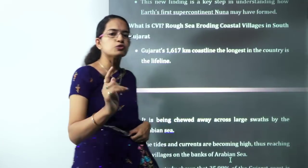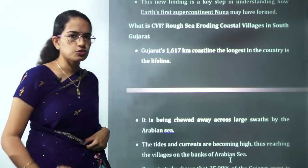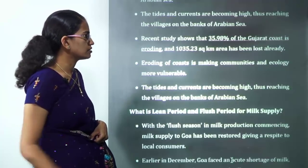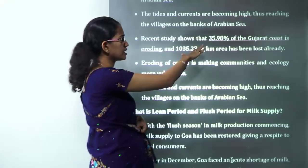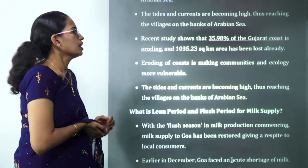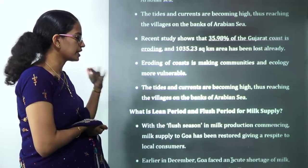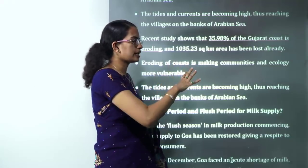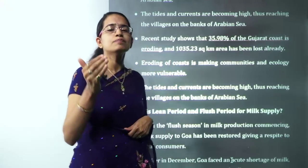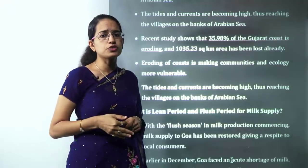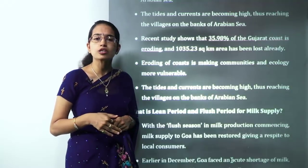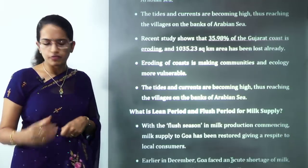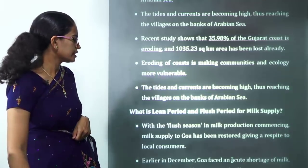The Coastal Vulnerability Index (CVI) reflects that coastlines are eroding at a fast pace. Gujarat is considered to have the longest coastline in India and approximately 35% of it has been eroded. Controlling coastal erosion through understanding high tides, low tides, and relevant methods are important parameters to study.